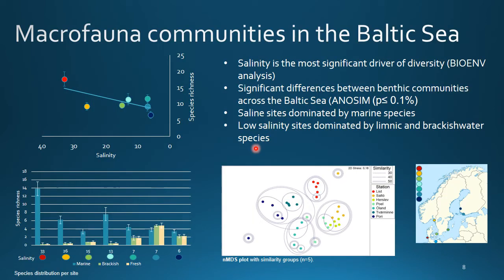Unfortunately, I don't have genetic data yet, but let me show you what is going on in the macrofauna communities in the Baltic Sea. Salinity shows to be the most significant driver of biodiversity in the Baltic Sea, with all communities being significantly different from each other. Furthermore, we see that the most saline sites are dominated by marine species, and the lower salinity sites are dominated by freshwater species and brackish water species.